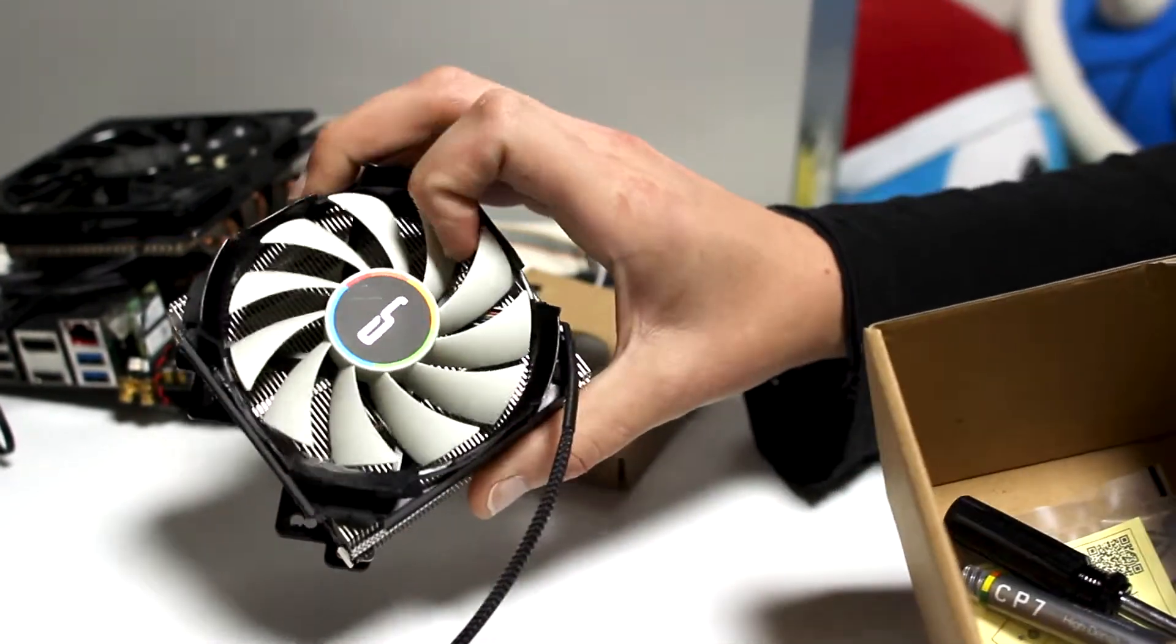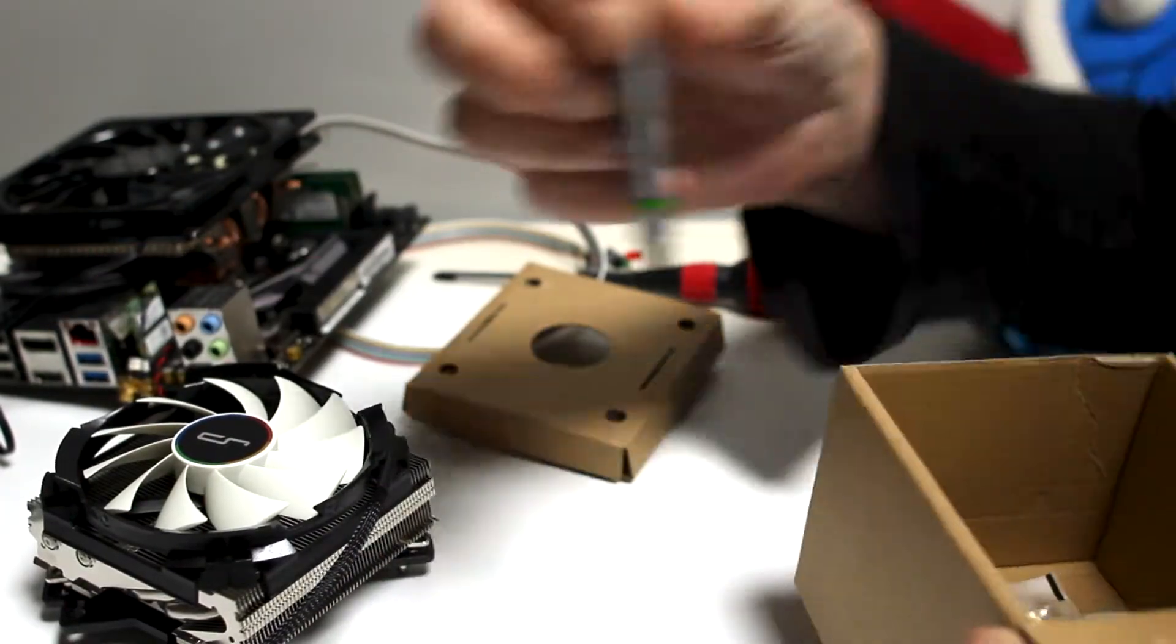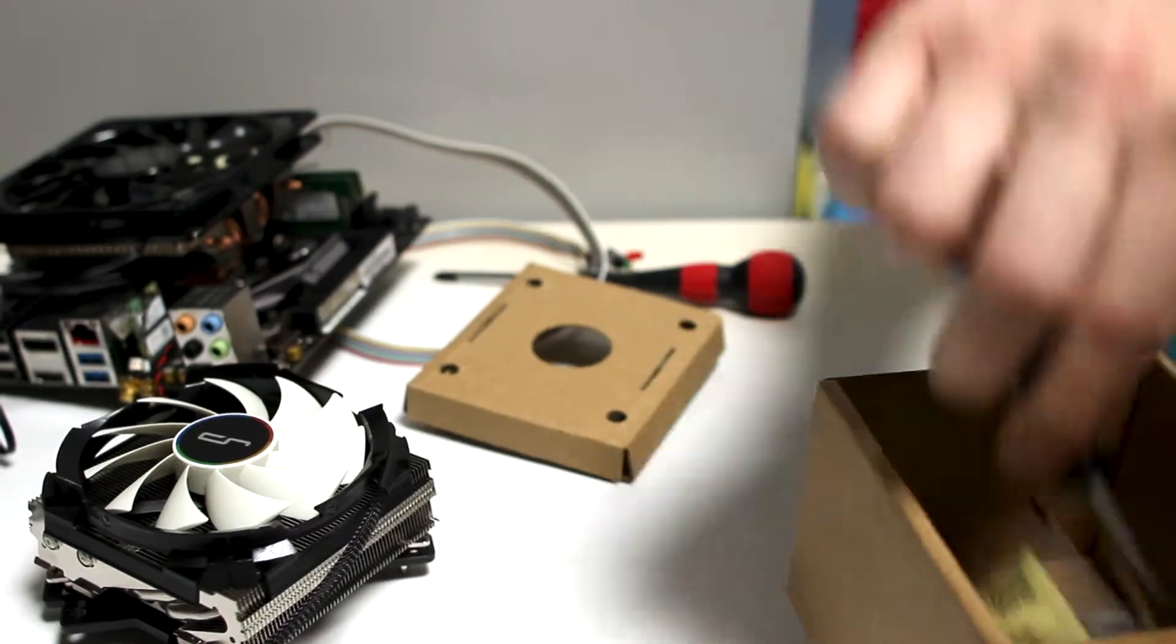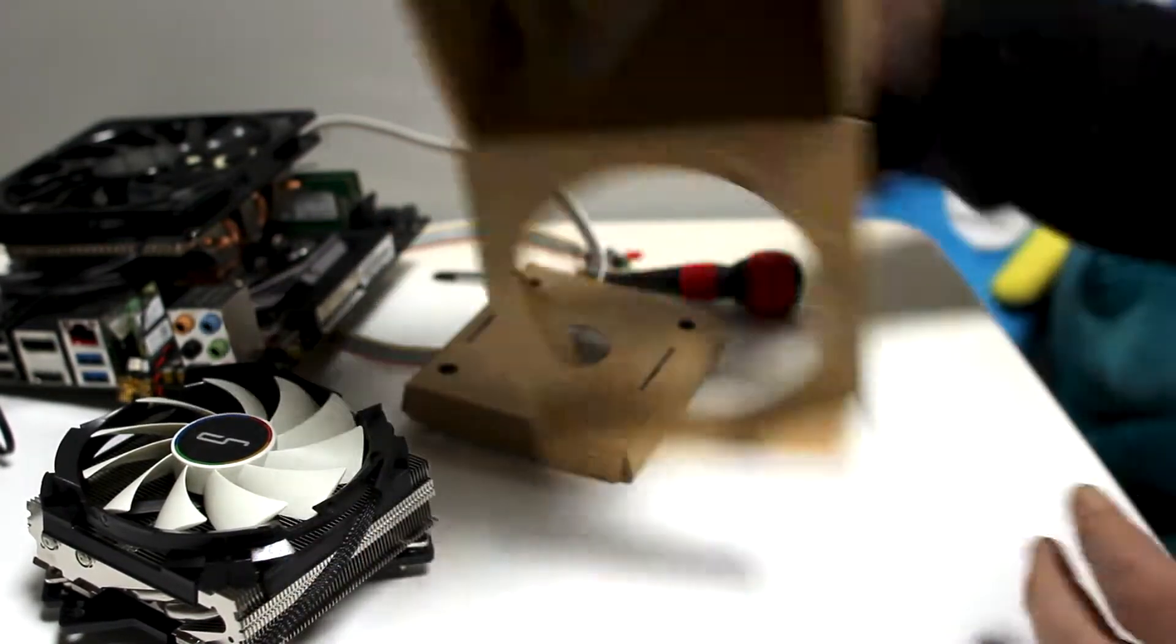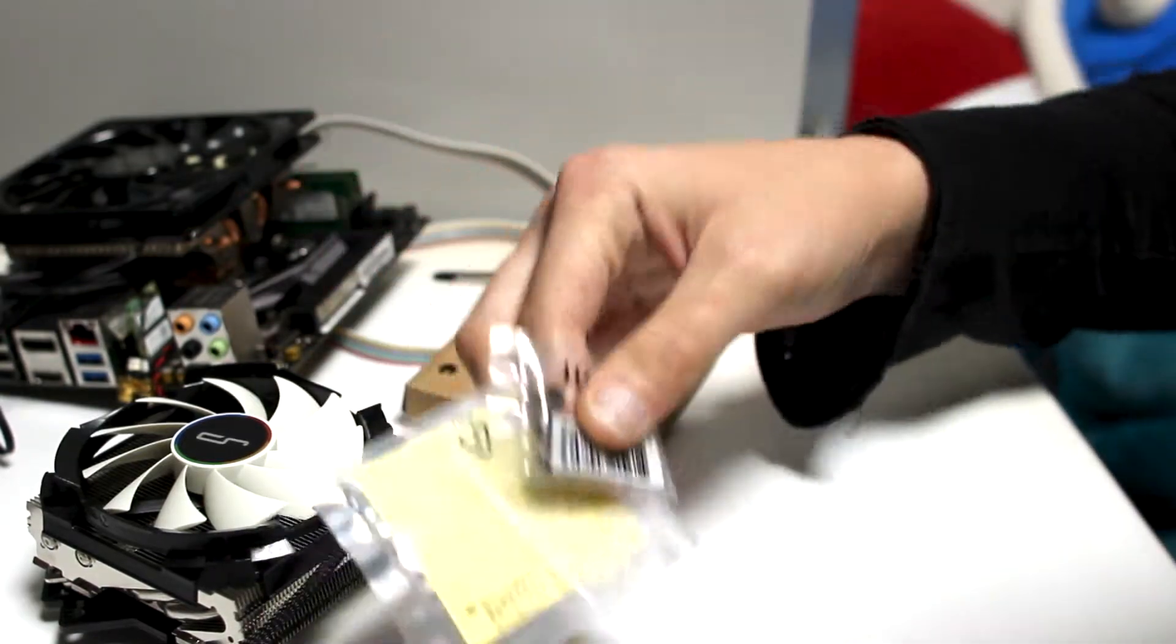So here's the Cryorig cooler. It's actually really cool looking. It comes with thermal paste, Cryorig thermal paste, screwdriver, box, and some mounting spacers and nuts.